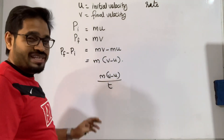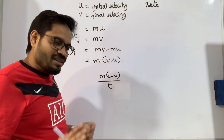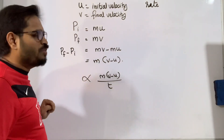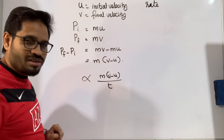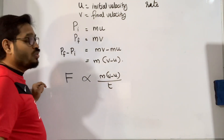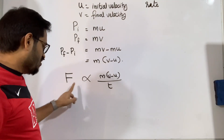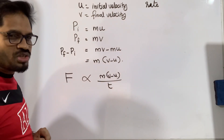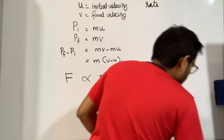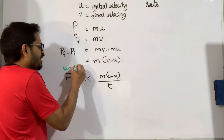The rate of change of momentum is always found to be directly proportional — this symbol means directly proportional — to the force applied. Not just any force: it is the unbalanced force applied in a particular direction.